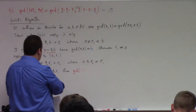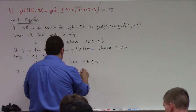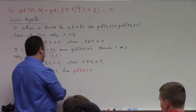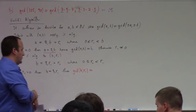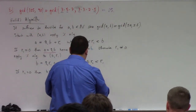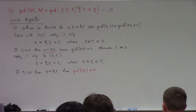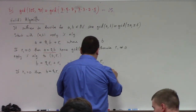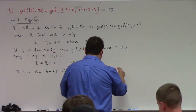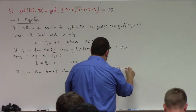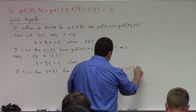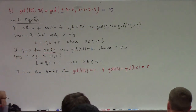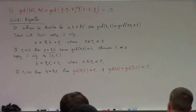By the same logic, this says the greatest common divisor of B and R₁ is R₁. But that's also going to be the greatest common divisor of A and B. Why is the GCD of A and B related to the GCD of B and R₁ here?